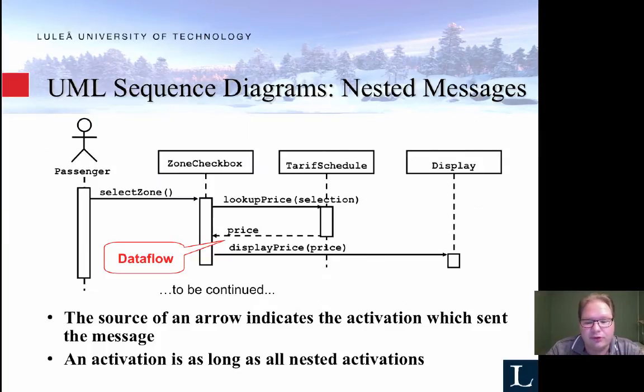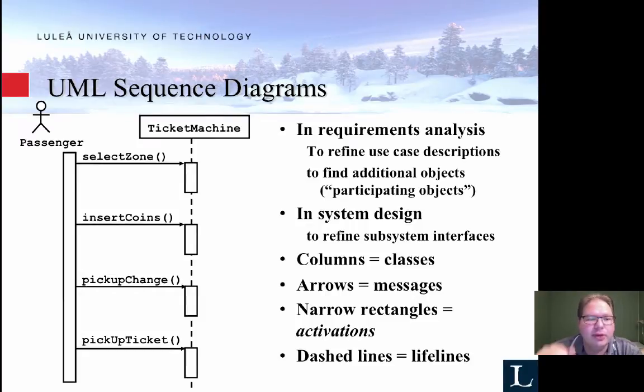Just to show you a few different things here. So we have an actor, the passenger, where the passenger has a lifeline, and that's the vertical column when the passenger is active. We have an object called a ticket machine, and that also has a lifeline. So we select the zone, it's active for a while, we insert coins, it's active for a while, pick up change, it's active for a while, pick up ticket, it's active for a while. So this is a very simple sequence diagram.